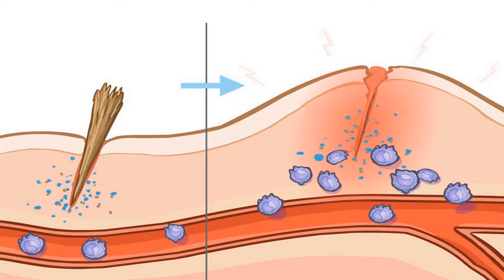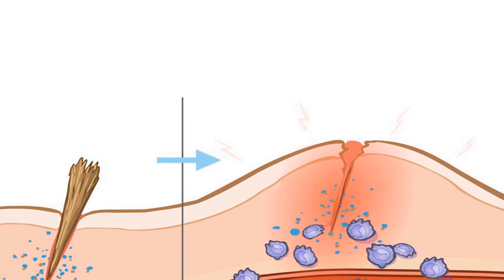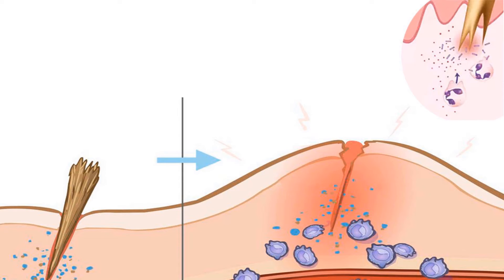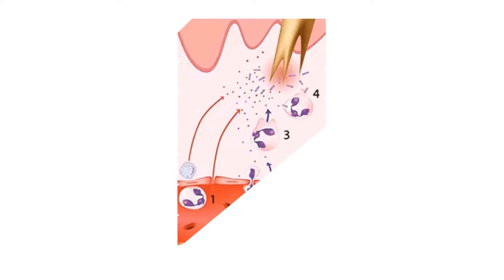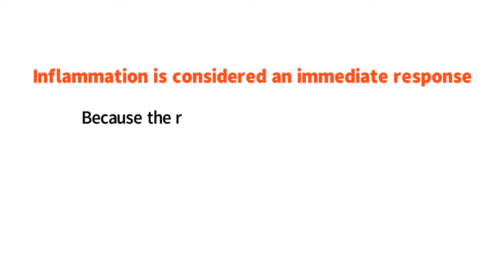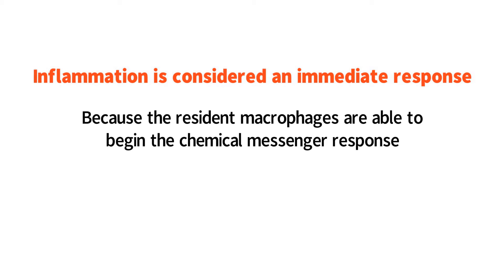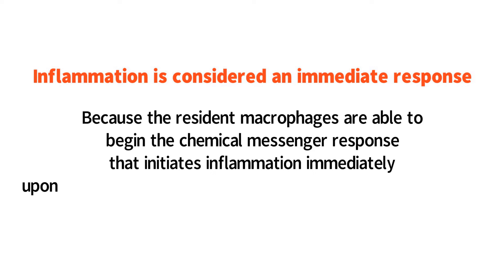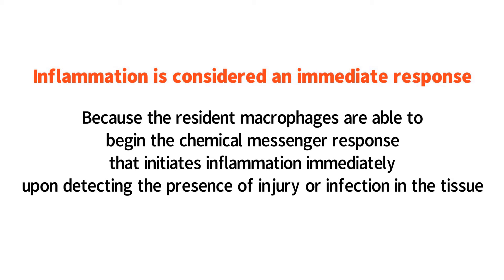Similarly, pathogens such as bacteria and viruses may have entered the tissue at the site of the injury. The presence of pathogens can also be detected by macrophages in the injured tissue. When the macrophages detect injury and infection, they respond by immediately releasing chemical messengers that signal additional cells of the immune system to travel to the site of injury and infection. The reason inflammation is considered an immediate response is because resident macrophages are able to begin this chemical messenger response immediately upon detecting the presence of injury or infection.